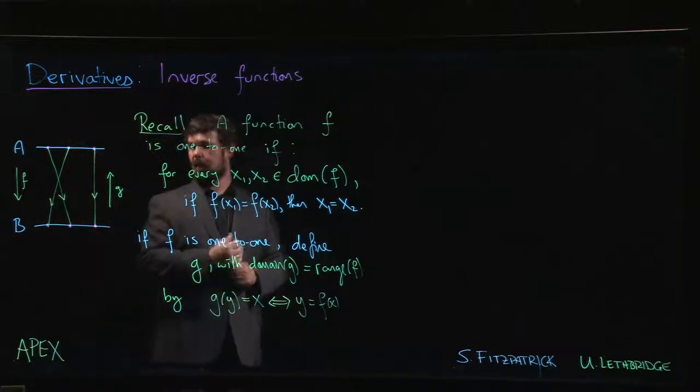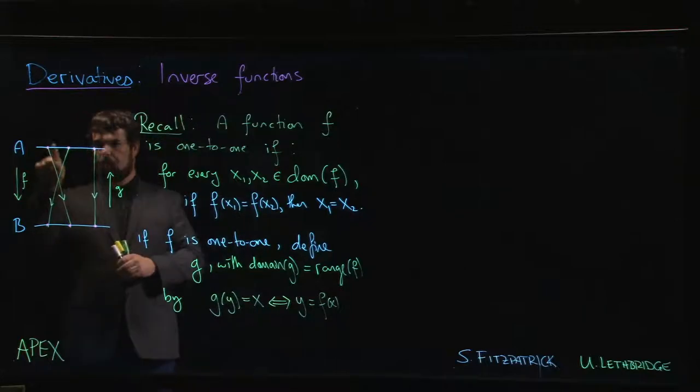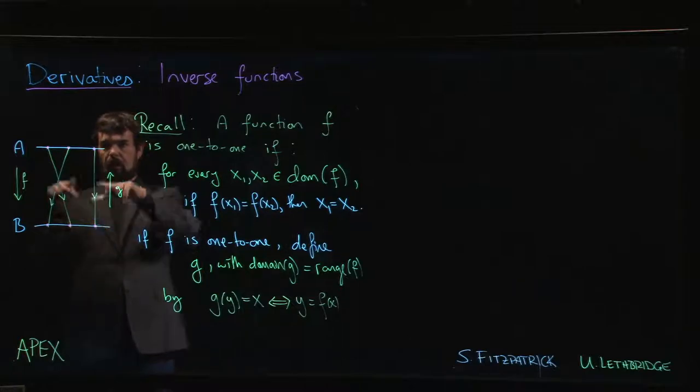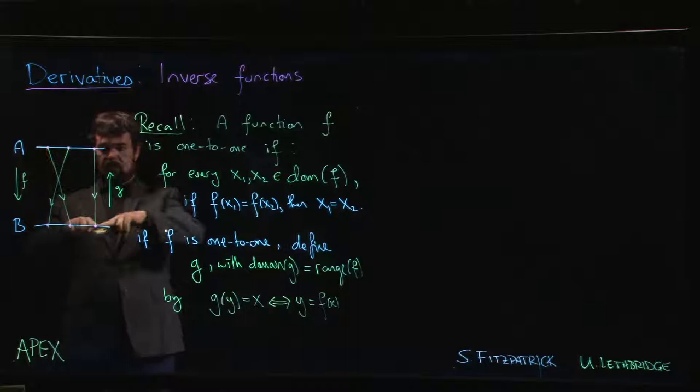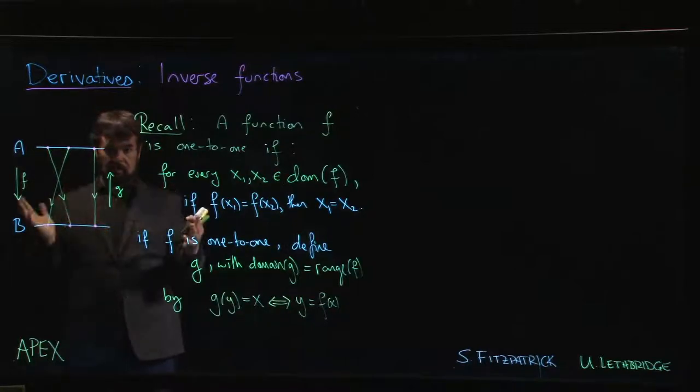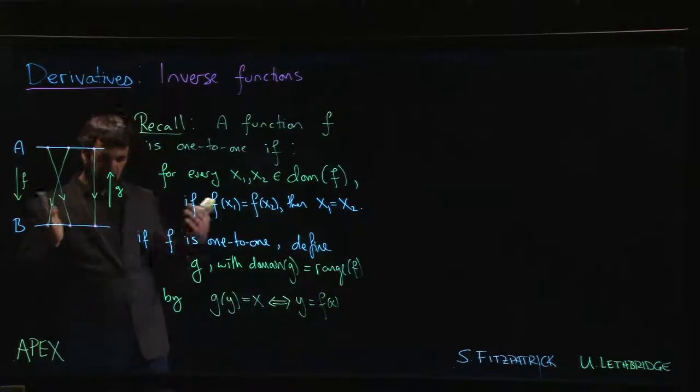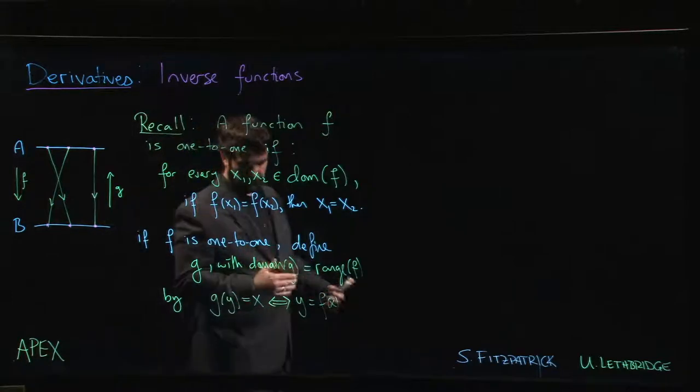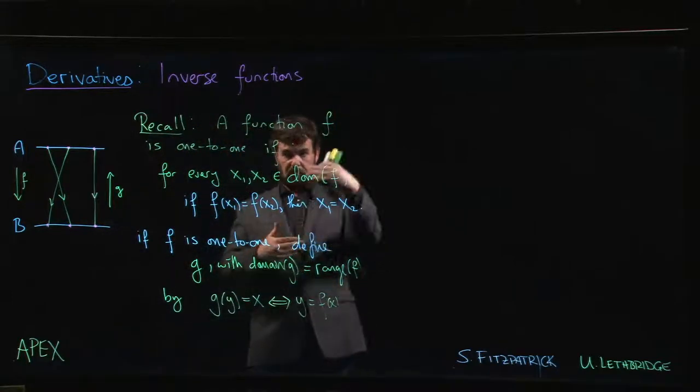The reason why we want our original function to be one-to-one is that if there were two different x values that both went to the same y value and I try to define a function going back the other way, well now I have two out arrows originating at the same point—that means I don't have a function.